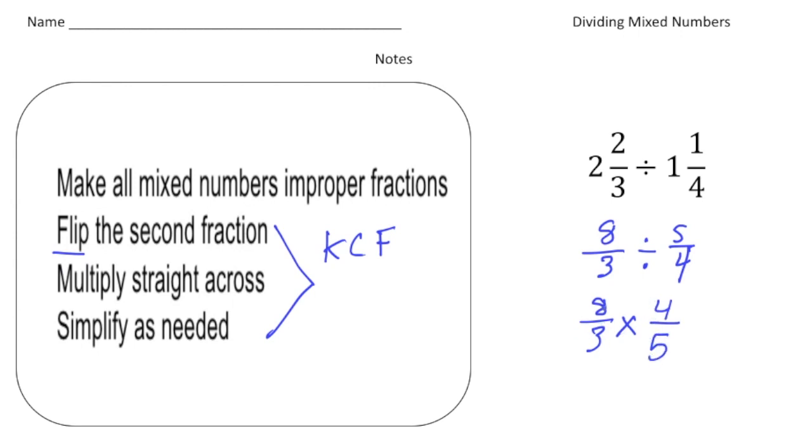So now we can see if we can cross-reduce, and we can't. So the multiplied fractions, now we multiply the denominators. So eight times four is 32. And then we multiply the denominators. Three times five is 15.